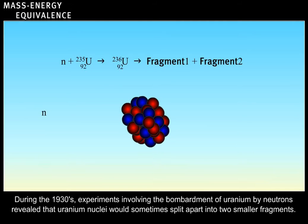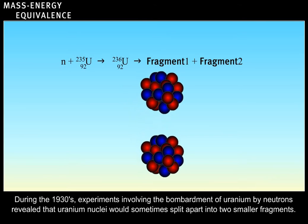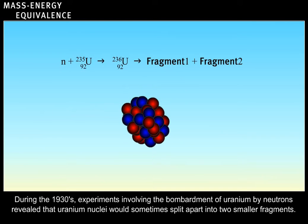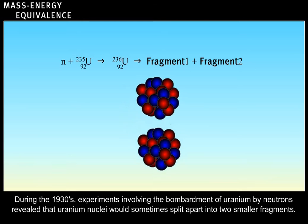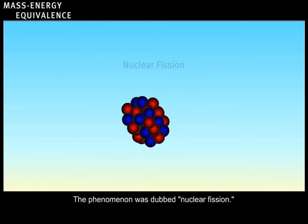During the 1930s, experiments involving the bombardment of uranium by neutrons revealed that uranium nuclei would sometimes split apart into two smaller fragments. The phenomenon was dubbed nuclear fission.